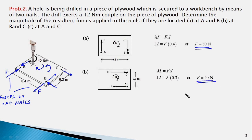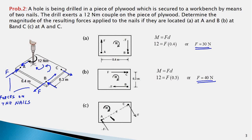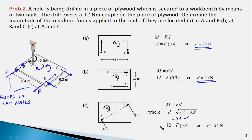In part c, the nails are at points A and C with a distance of 0.5 meters between them. The force experienced by the two nails is 24 newtons, and that's the answer.